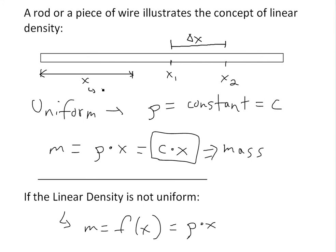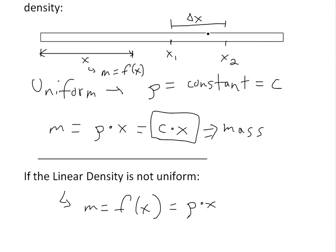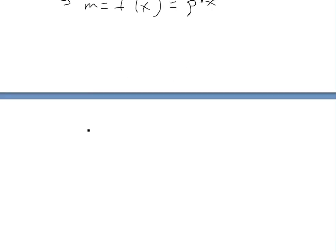If from here to here, from the left side all the way to x, if this has a mass m equals f of x, then the delta mass, or the mass of this rod right here, delta m would just be the mass of x2 minus mass of x1, or we'll just write it as f of x2 minus f of x1. And delta x is just equal to x2 minus x1.